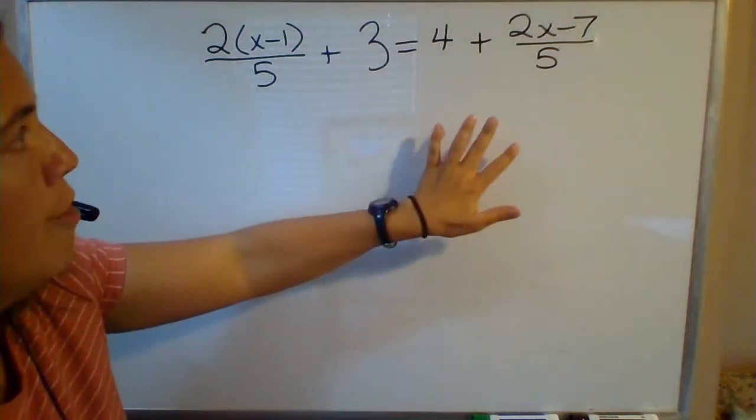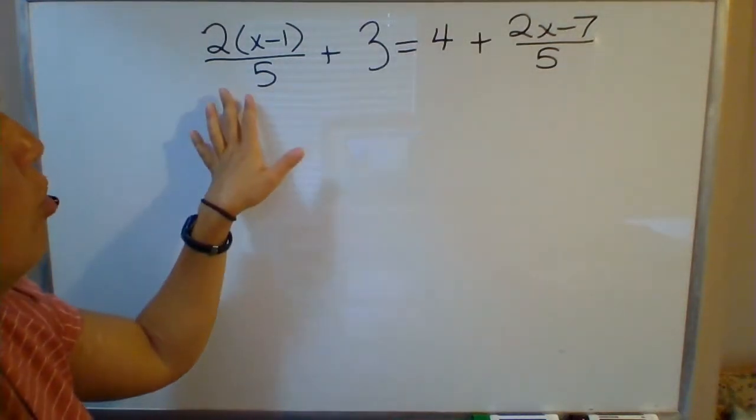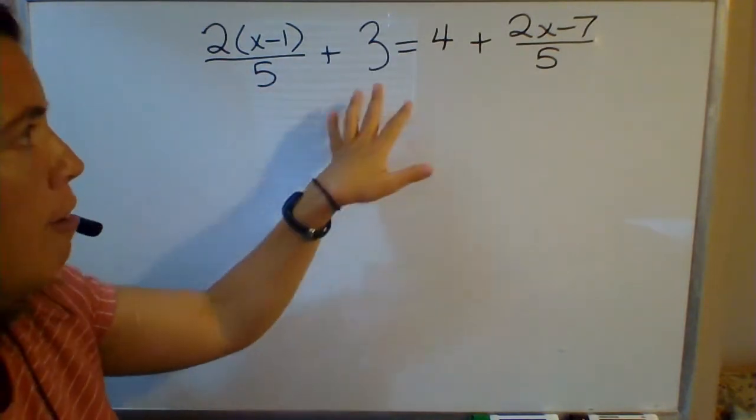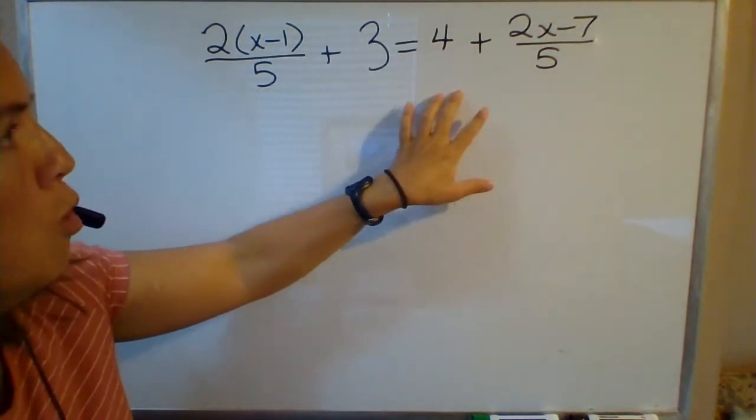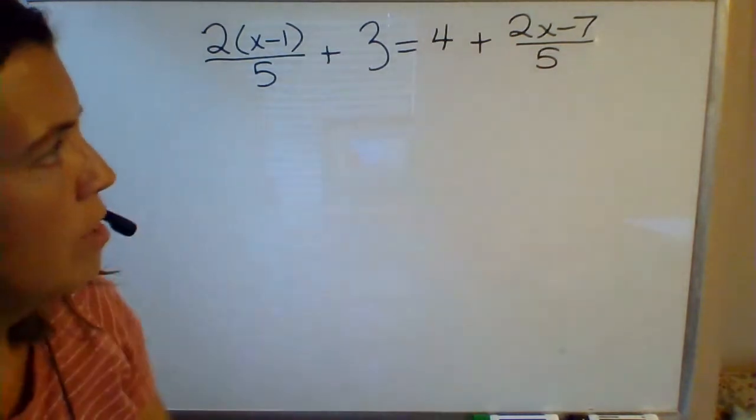So suppose you're asked to solve this equation: 2 times x minus 1 all divided by 5 plus 3 equals 4 plus 2x minus 7 all divided by 5.